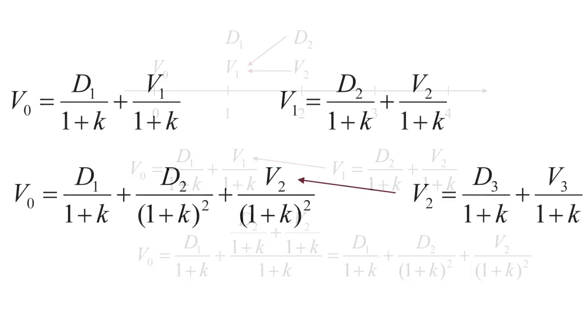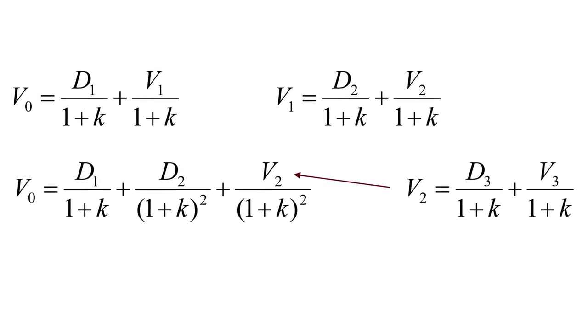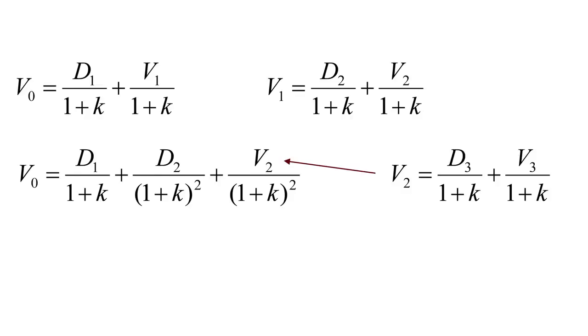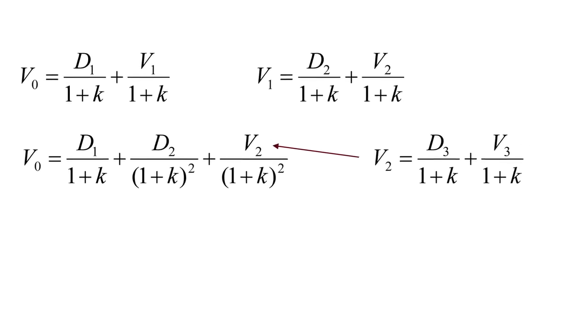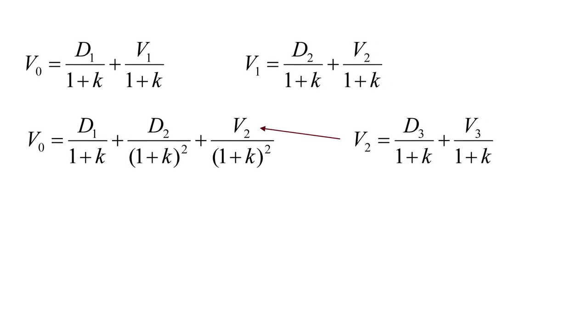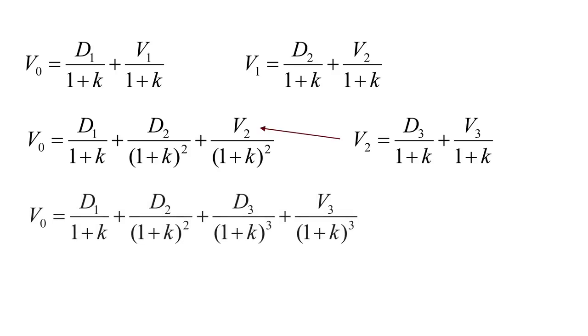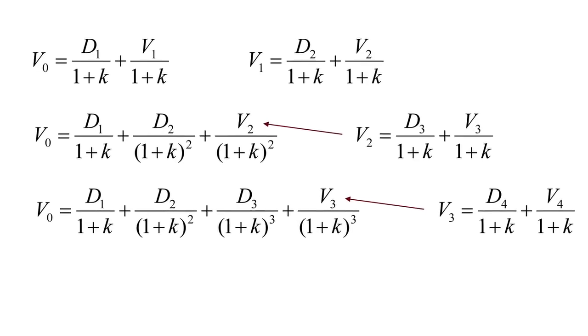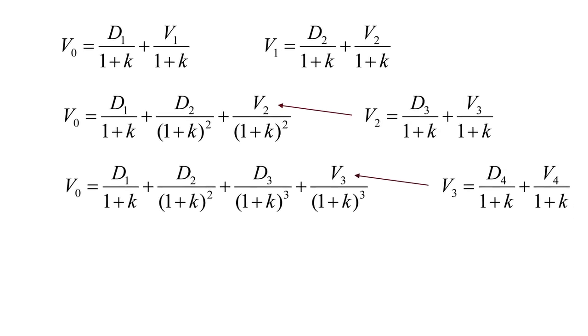So we'll make another substitution. The value of the stock at time two will simply be the present value of the dividend at time three plus the present value of the selling price at time three. Substituting that in, we see that the value at time three shows up. So we'll have to make another substitution. Assume the person buying the stock at time three is paying the present value of the dividend at time four plus the present value of the selling price at time four. And so on.